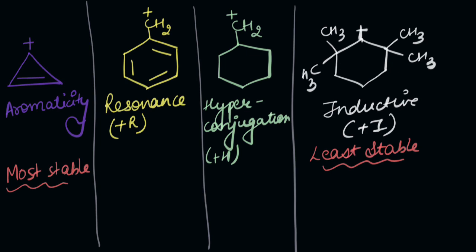Coming back to the first question: which of the following substrates would react the fastest via SN1 mechanism? Well, the one that's forming the most stable carbocation. This will be fastest. So the substrate that actually reacts the fastest via SN1 mechanism would be this one.